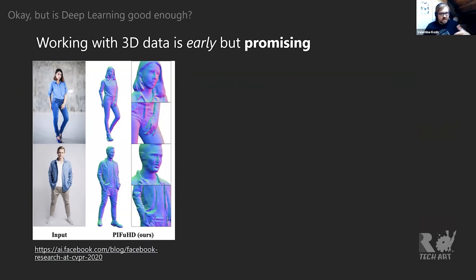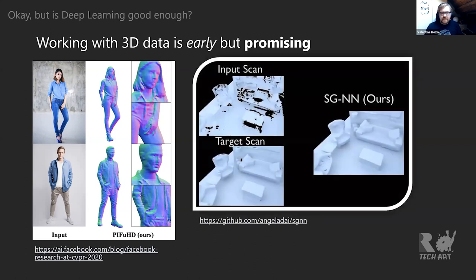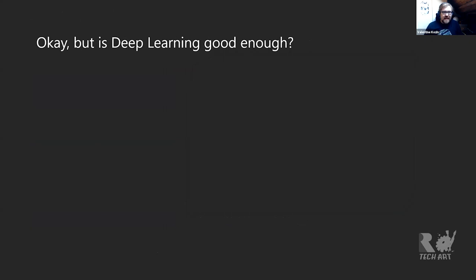Facebook has released a model — available online — that takes full-body photos of people and generates 3D models from them. As long as your input is relatively similar to the training domain, it works really well: you get clothing wrinkles, a lot of detail. You also have things working with point clouds — point cloud completion where the model fills in gaps in your point cloud data, like if you're using LiDAR on a film set and have complicated occlusions you're not capturing. You can auto-complete and fill in that data.